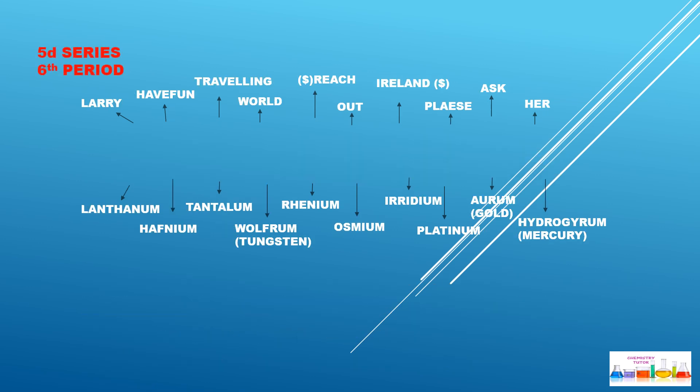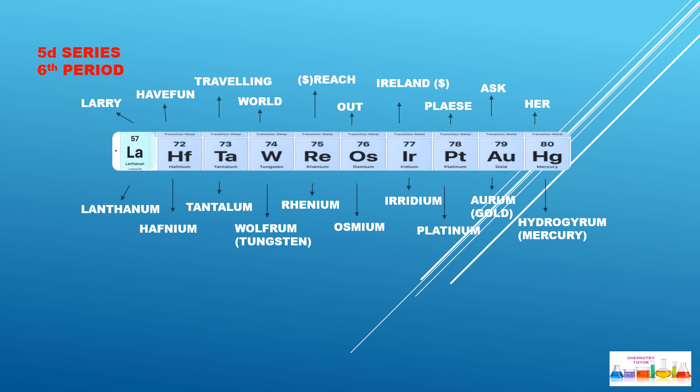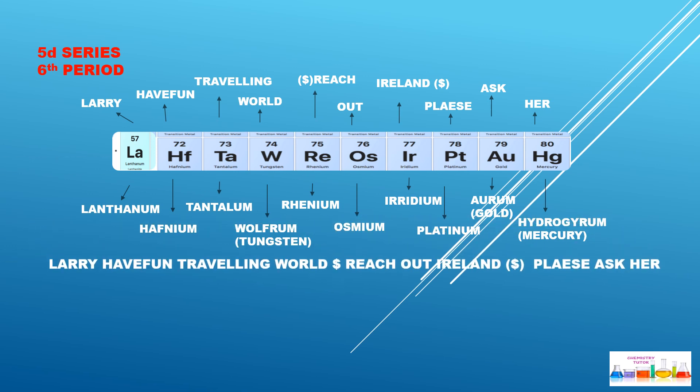Let's move to the 5d series, which is the sixth period. The mnemonic is: 'Larry have fun traveling world and reach out island and please ask her.' Larry = Lanthanum, Have = Hafnium, Fun = ?, Traveling = Tantalum, World = Wolfram (Tungsten), Reach = Rhenium, Out = Osmium, Island = Iridium, Please = Platinum, Ask = Aurum (Gold), Her = Hydrargyrum (Mercury). Learn this sentence: 'Larry have fun traveling world and reach out island and please ask her.'